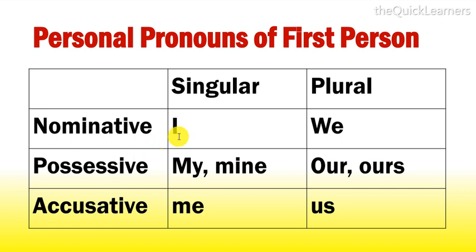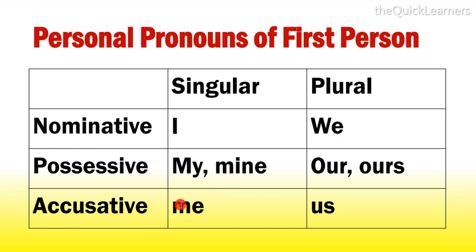The personal pronouns of the first person — I and we — are included in the nominative case. My, mine, our, and ours are included in the possessive case. Me and us are included in the accusative case. These are the personal pronouns of the first person.